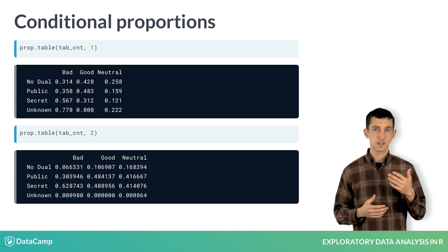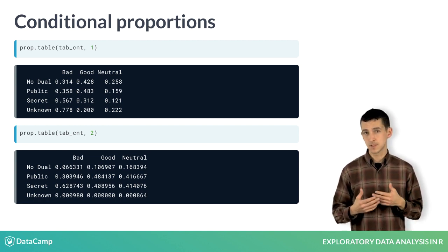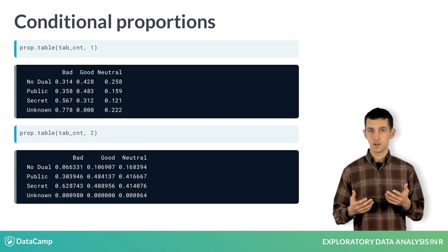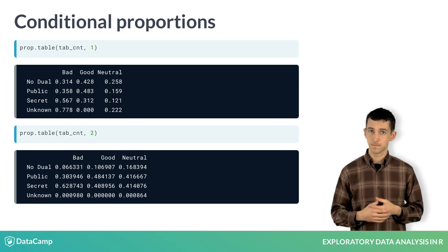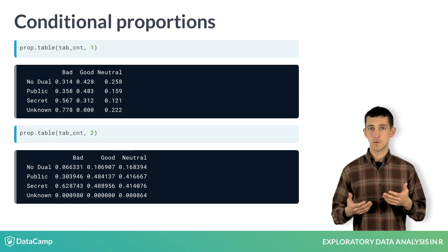To build a table of these conditional proportions, add a 1 as the second argument, specifying that you'd like to condition on the rows. We see here that around 57% of all secret characters are bad. Because we're conditioning on identity, it's every row that now sums to 1.